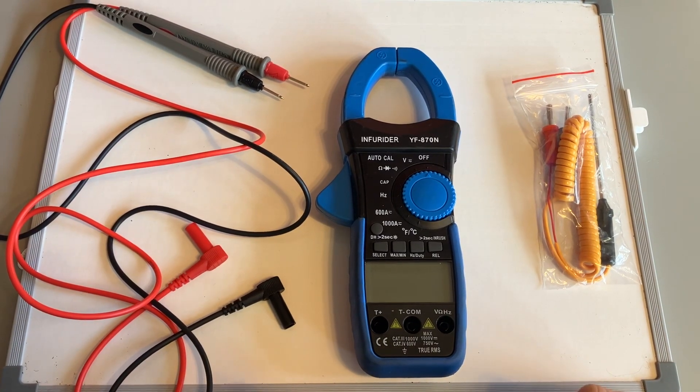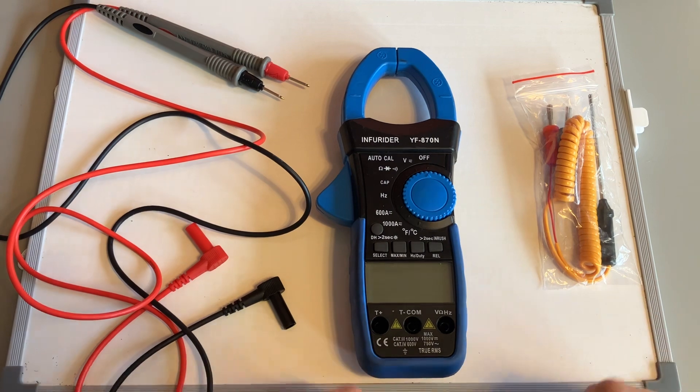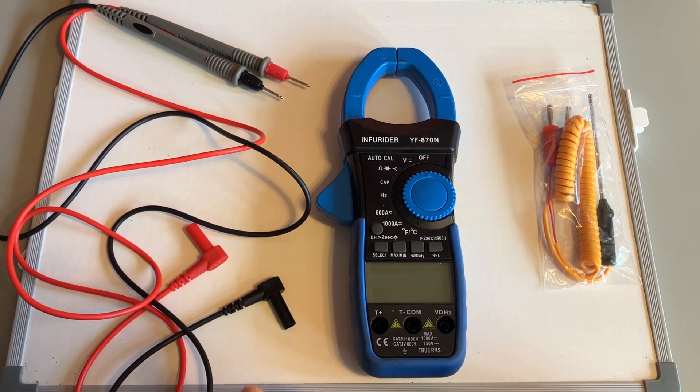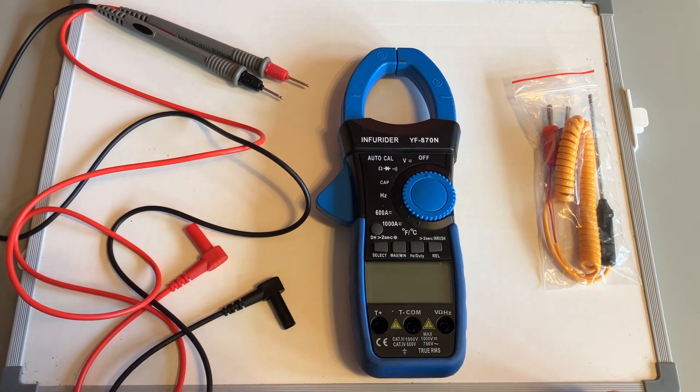Hi everyone, just a quick video on how to use a current tester or some people call it an amp clamp. Obviously being a mechanic I'll be looking at it from the perspective of a mechanic, but these are often used for electricians with properties as well.